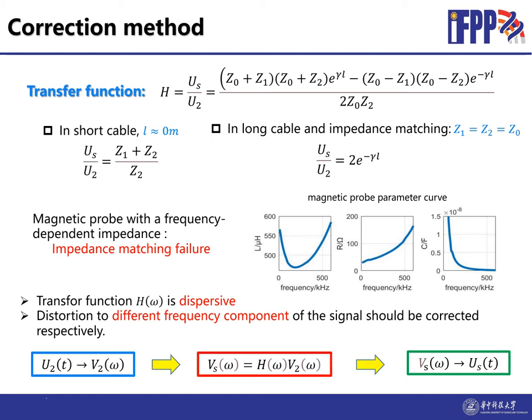So in our correction method, all the signals are transformed to the frequency domain. First, we transfer U2 to V2(ω) in the frequency domain by the Fourier transform. Then we calculate each frequency component of V2 by the transfer function H(ω) to Vs(ω). Then we inverse transfer Vs to the time domain and we get the final signal Us(t).